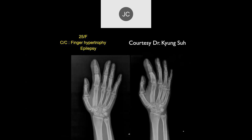25-year-old female with finger hypertrophy and epilepsy. The second proximal phalanx looks thickened with a lot of periosteal reaction. When you get swelling and inflammatory changes in one digit, the first disease we usually think about is psoriatic arthritis. But this patient had epilepsy, which typically isn't associated with psoriatic arthritis, no evidence of psoriasis, and the periosteal reaction is more marked than the tenosynovitis and soft tissue edema we usually see in psoriatic arthritis.